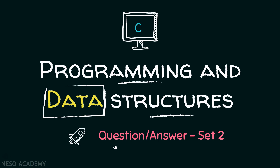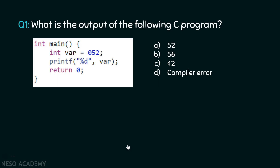Now we are going to consider some questions in C programming. What is the output of the following C program? This is the C program available over here. What would be the output? Is it 52? Is it 56? Is it 42? Or is it a compiler error? Pause the video for a while and try to answer this question on your own.